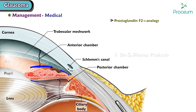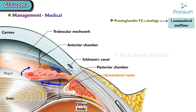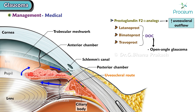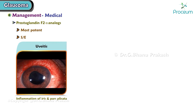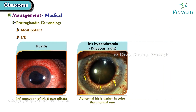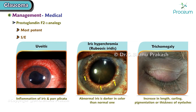Prostaglandin F2-alpha analogs work exceptionally well by increasing uveoscleral outflow. Commonly used drugs are latanoprost, bimatoprost, and travoprost. These are the drugs of choice for open angle glaucoma and normal tension glaucoma. Being the most potent, they have a few side effects such as uveitis, iris hyperchromia, and trichomegaly.